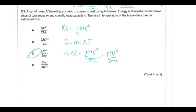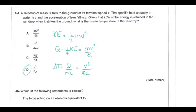A car of mass M travelling at speed V comes to rest, losing all its kinetic energy dissipated by the brake discs of mass m and specific heat capacity c. The energy supplied to the brake pads equals the kinetic energy of the vehicle. Putting that into Q = mcΔT and rearranging gives delta T. A common mistake is cancelling the masses, not realising M and m are different. Done correctly, you get the expression shown.